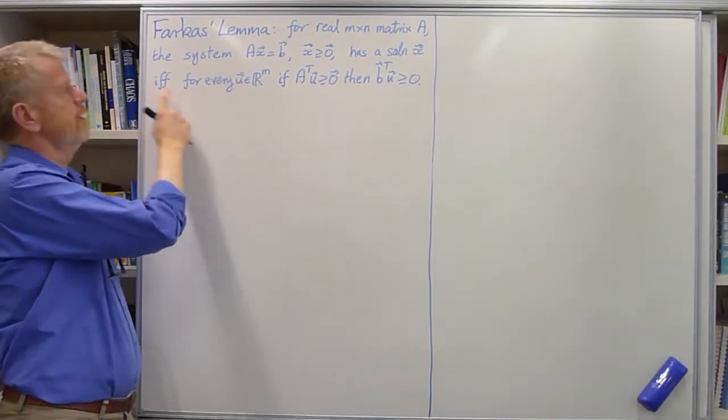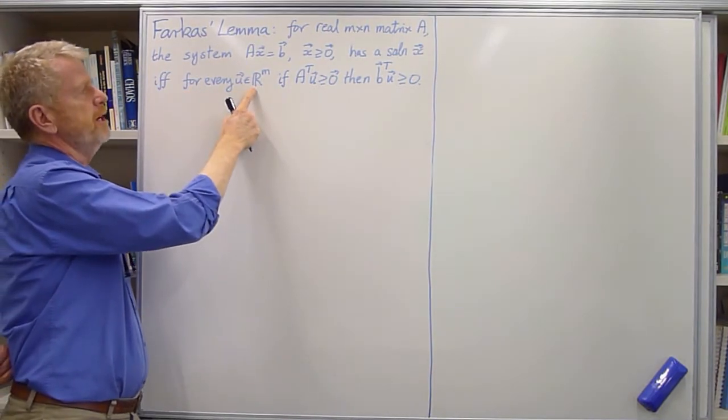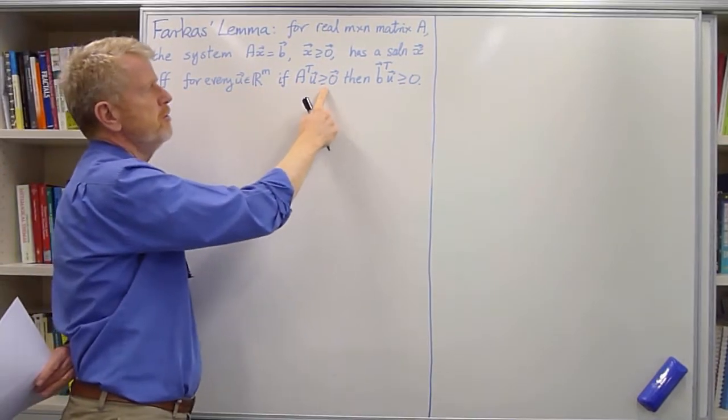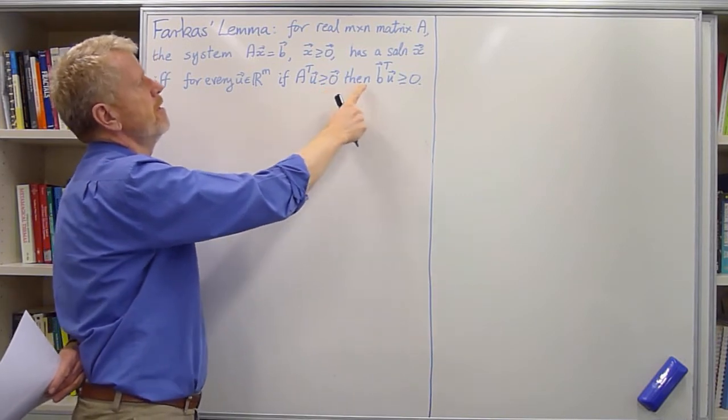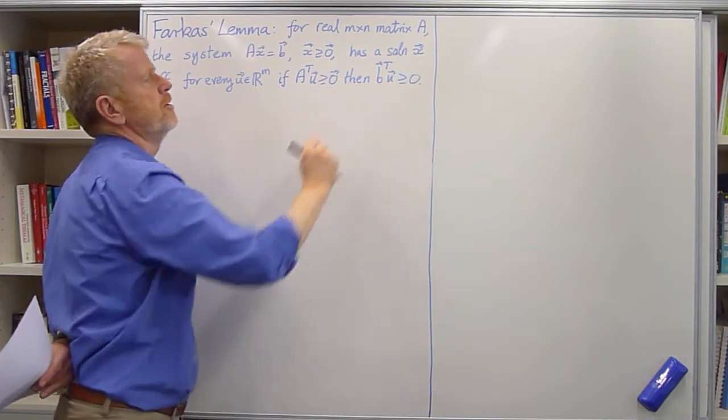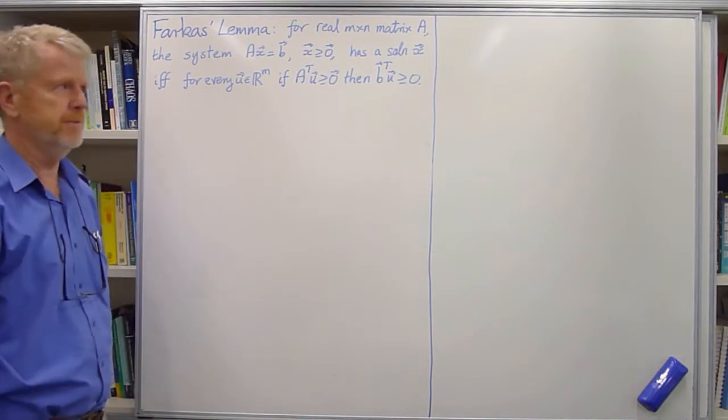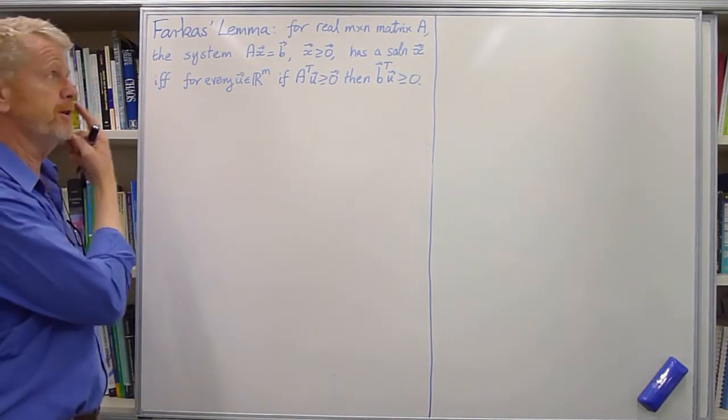if and only if, for every u in Rm, if A transpose U has all components bigger than or equal to 0, then B transpose U is also bigger than or equal to 0.